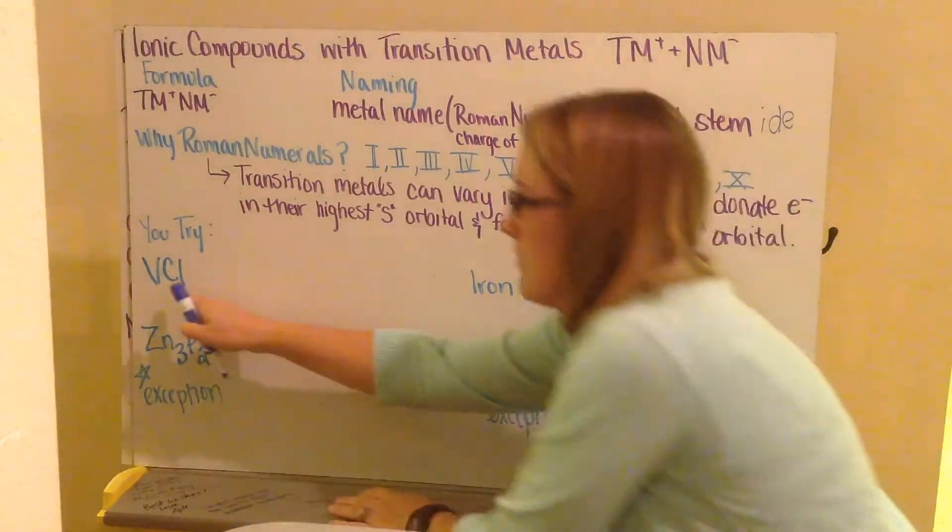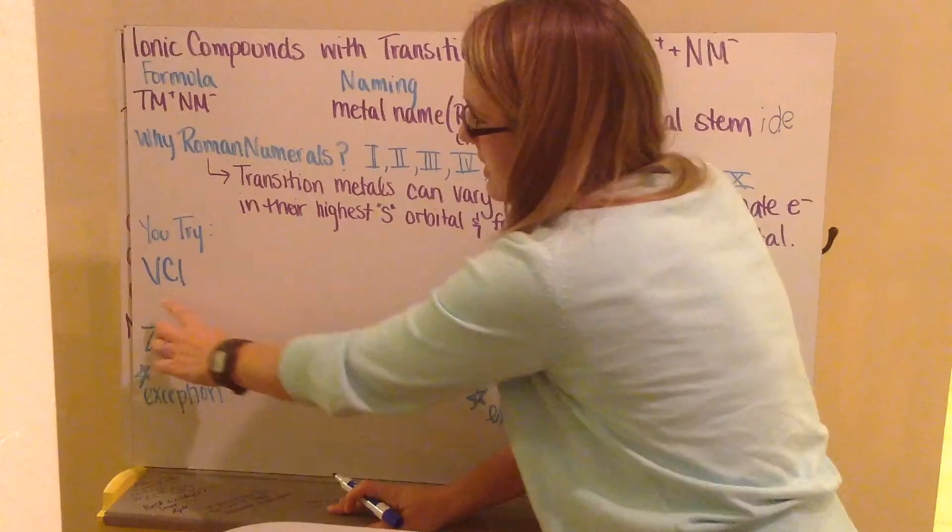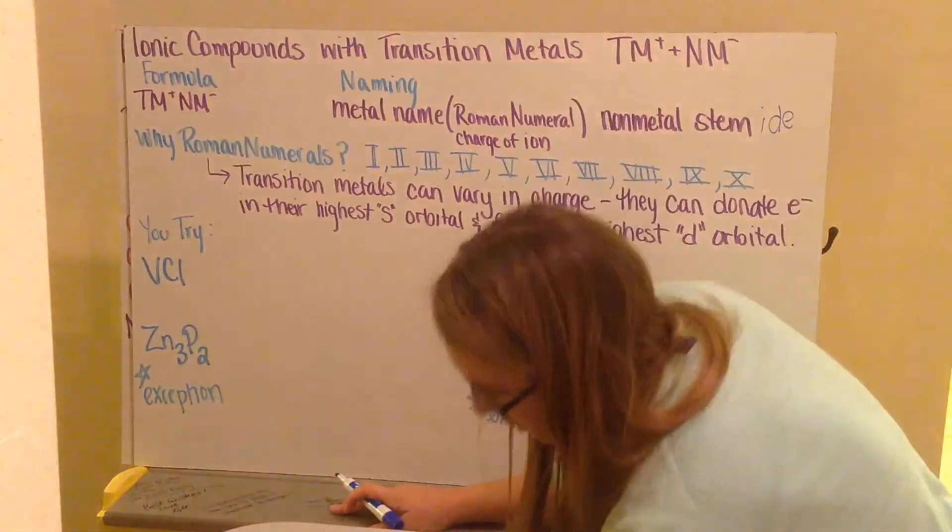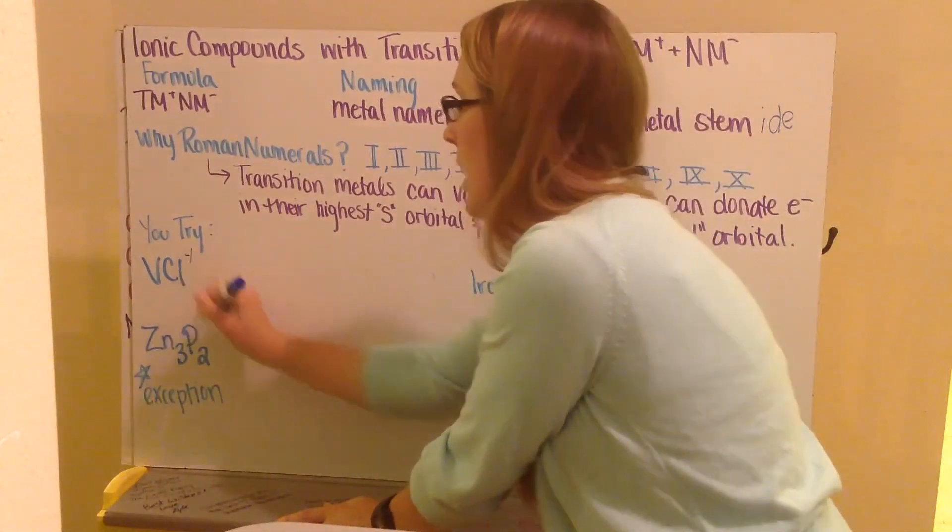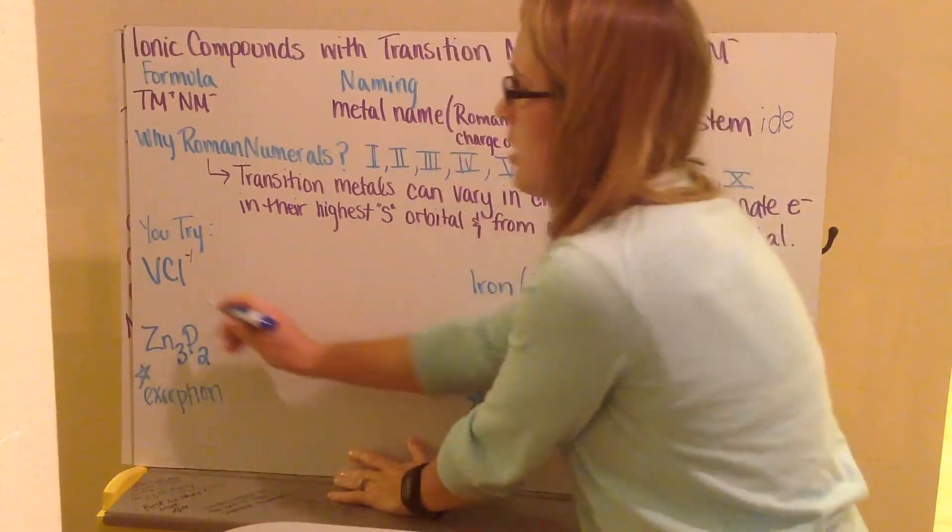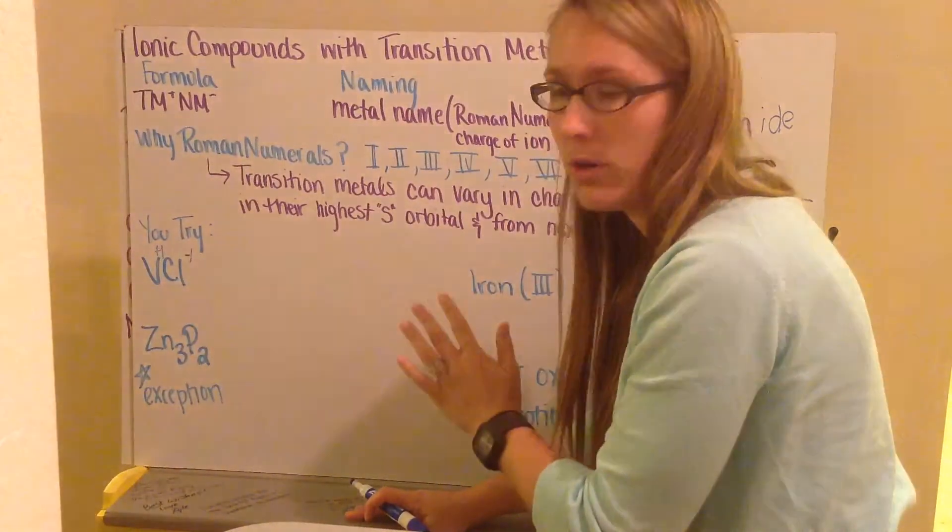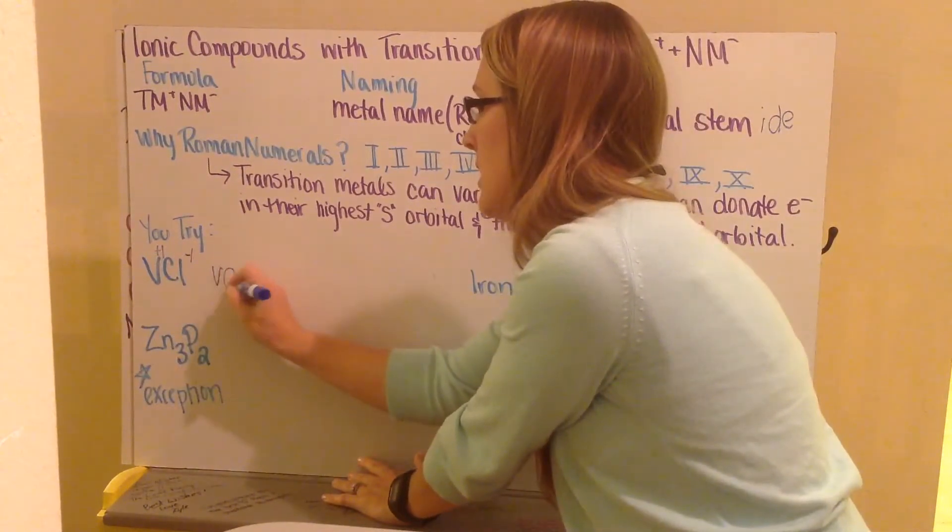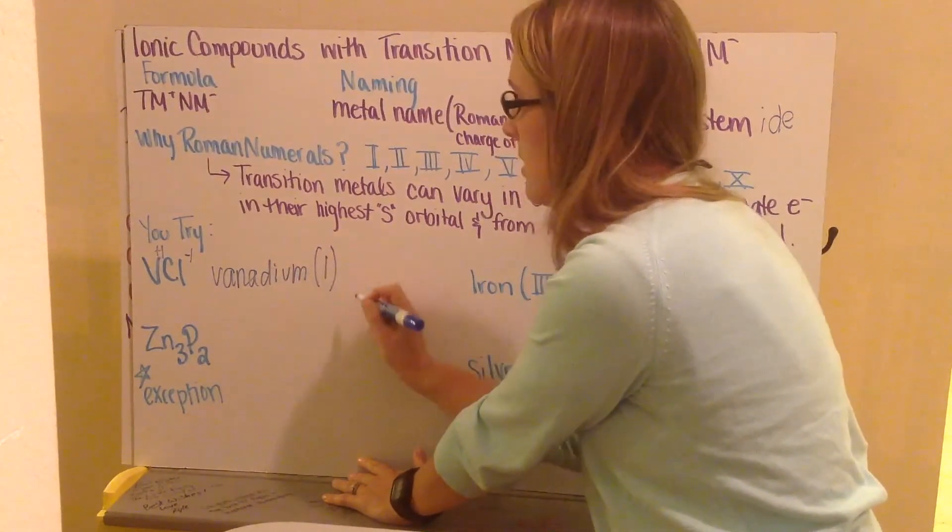Let's go ahead and start by trying to write the names from given formulas. If I have vanadium with chlorine, I first look and see my non-metal, what their charge is. I notice that I don't have any subscripts, so I look to see where is chlorine on the periodic table. Well chlorine on our periodic table is in group 7, so I know it has a negative 1 charge. I can tell from my subscripts that my ratio of vanadium to chlorine is equal. So if chlorine had a negative 1 charge, that means vanadium had to have a positive 1 charge. Because I have vanadium plus 1, I'm going to have vanadium, parenthesis, Roman numeral 1, and parenthesis, and then I have chloride.